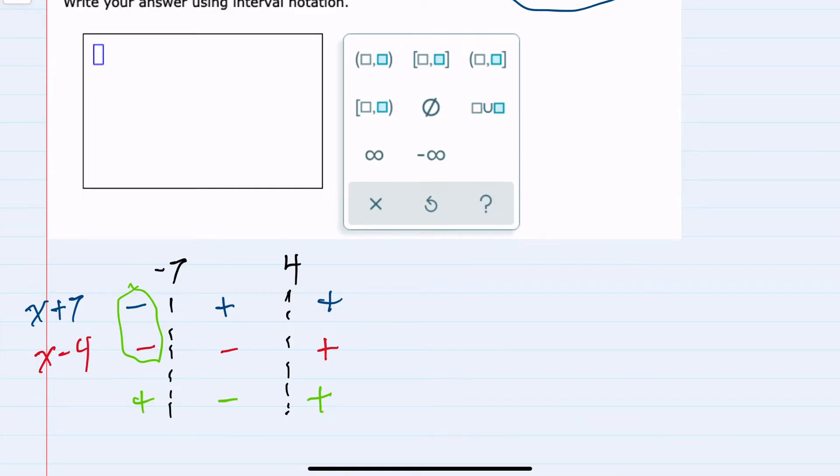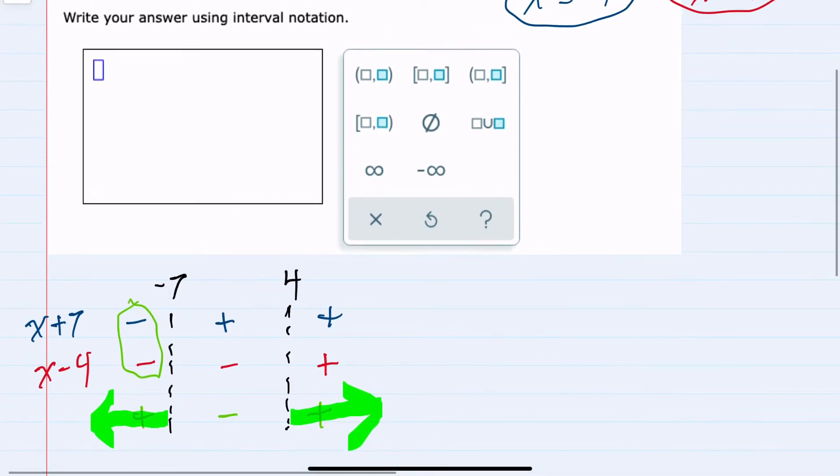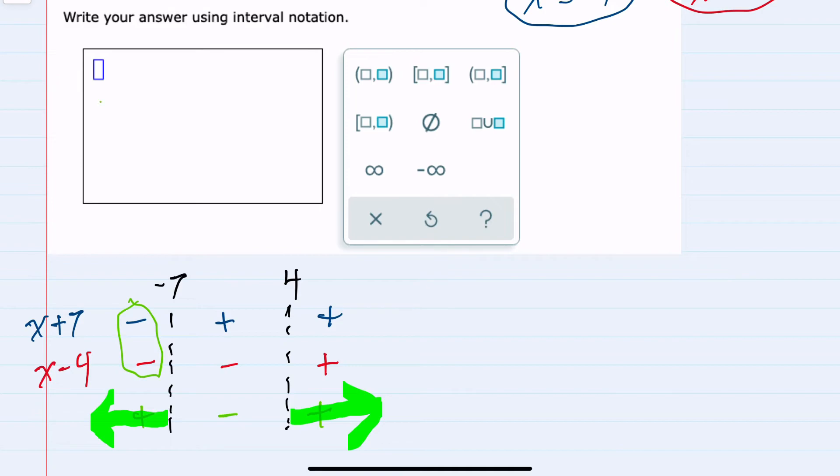So that quotient would be positive, or greater than 0, to the left of negative 7 and to the right of 4. So using interval notation, I would describe that as negative infinity, not inclusive, to negative 7.